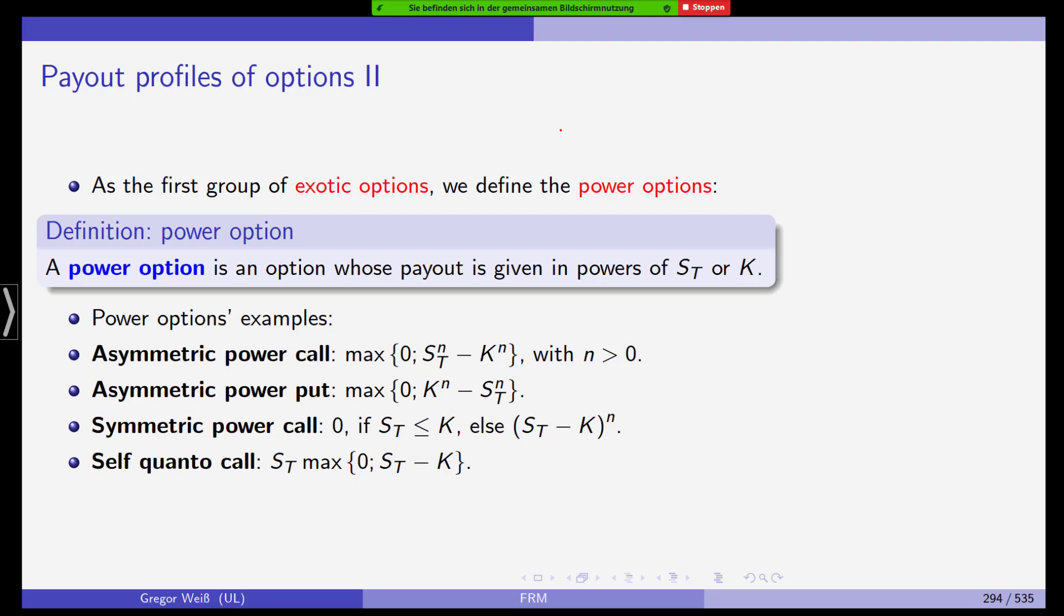We also have a symmetric power call. That is, if the underlying price is smaller or equal to the strike, we would get 0. And otherwise, we get the difference between the two taken to the power of N. So it's symmetric in the sense. And we can also have a self-quanto call, which is a call, the payout profile of a call, times the underlying price itself. So this is a payout that can be actually quite high.